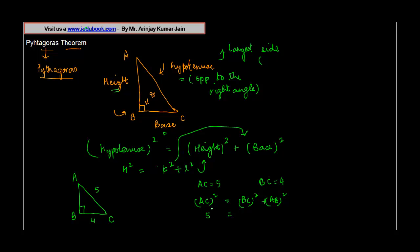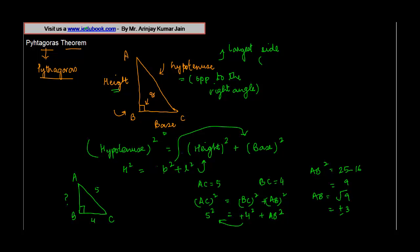AC we know is 5, so 5² = BC is 4² + AB². We don't know the length of AB, but if we put these values in the Pythagoras theorem, AB² = 5² = 25, 4² = 16, so AB² = 25 - 16 = 9. AB = √9, which could be ±3, but because length cannot be negative, we take this value as 3.